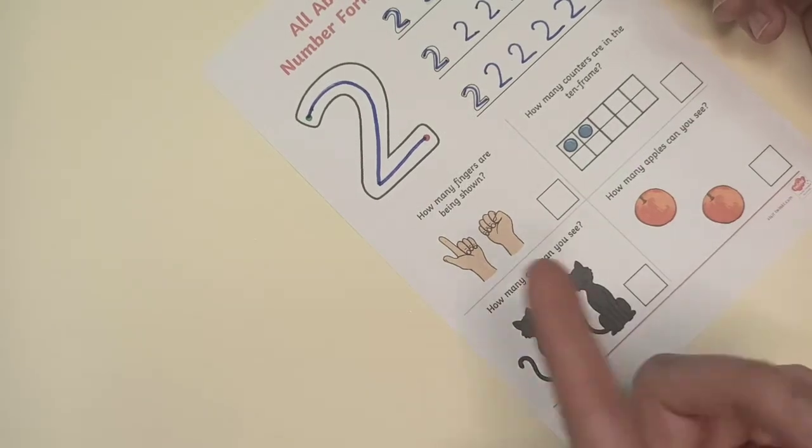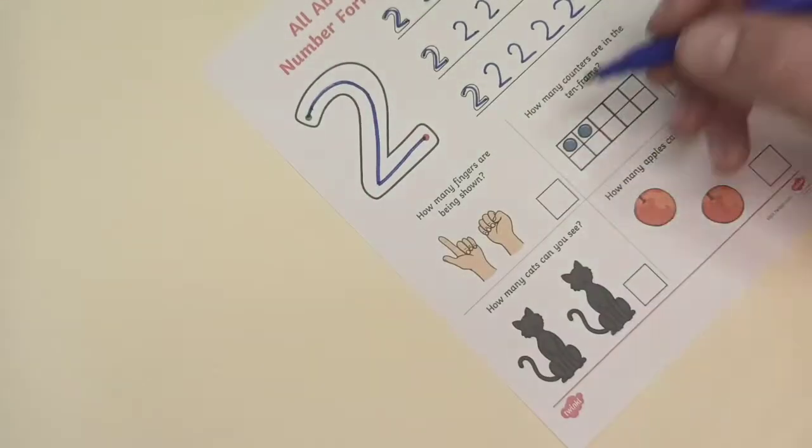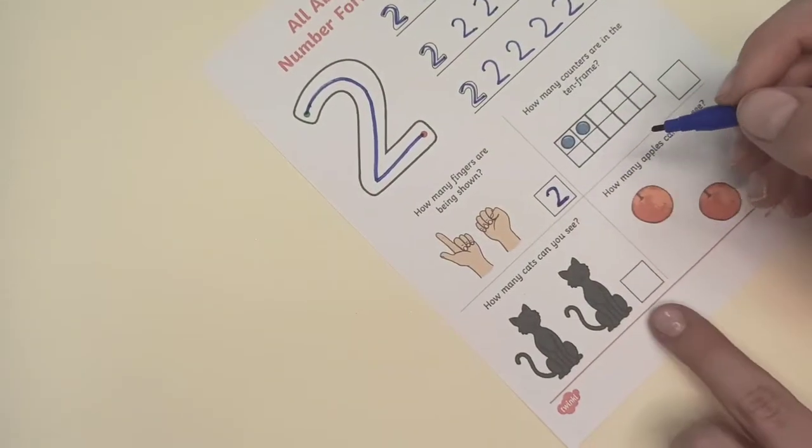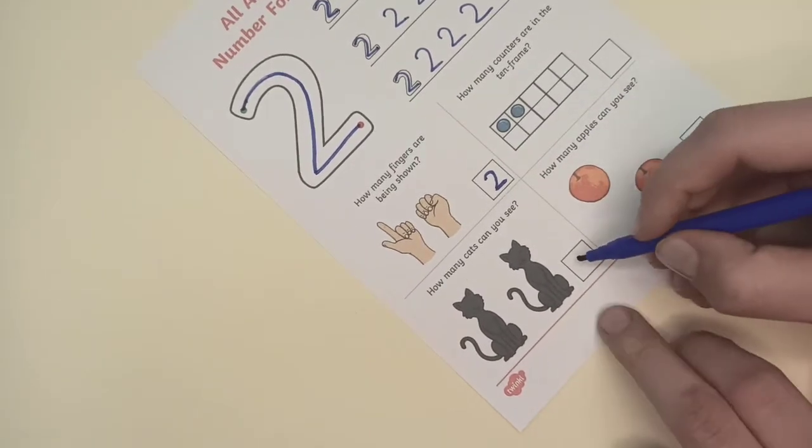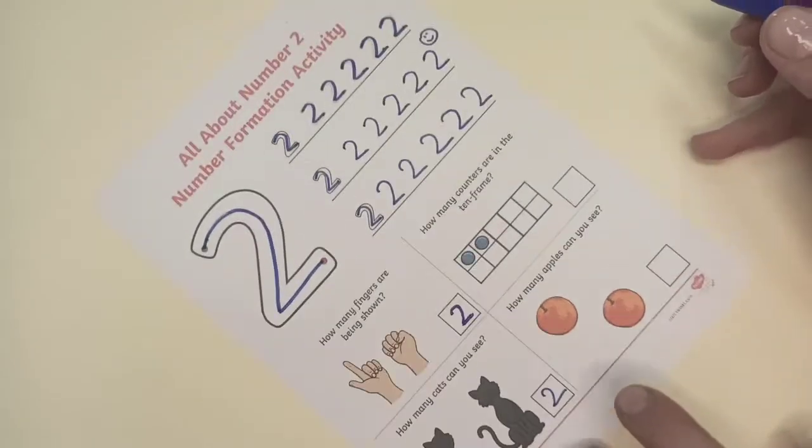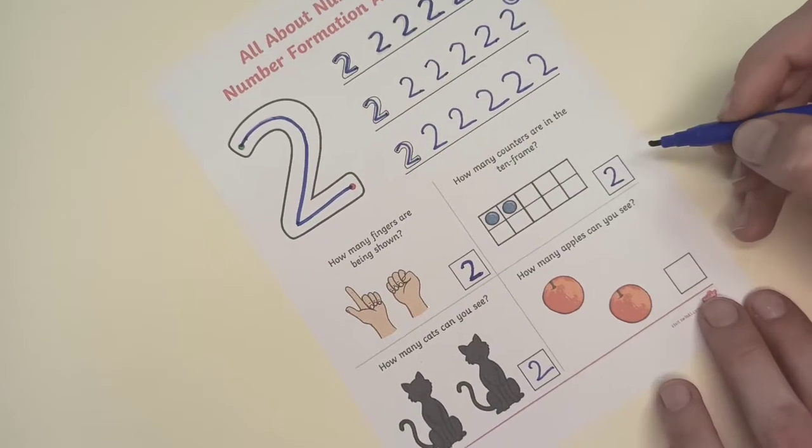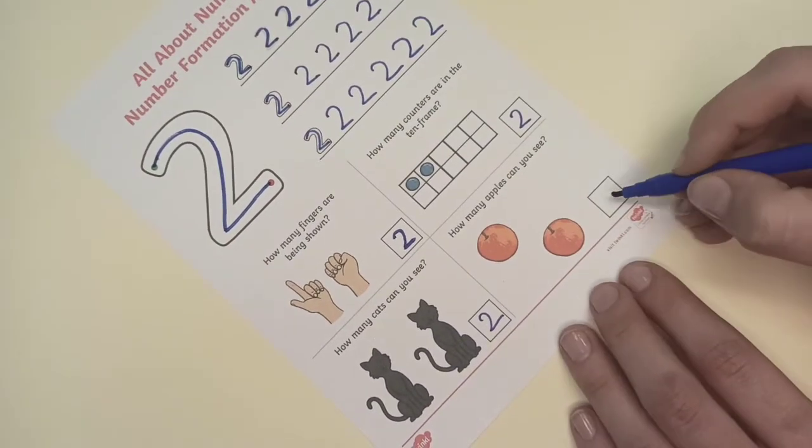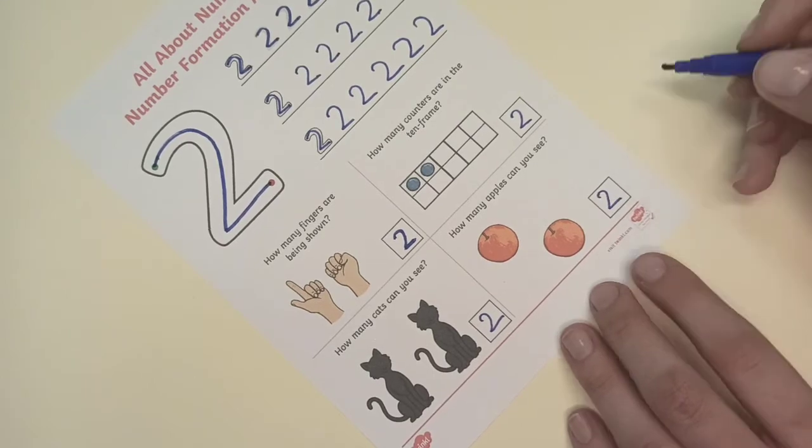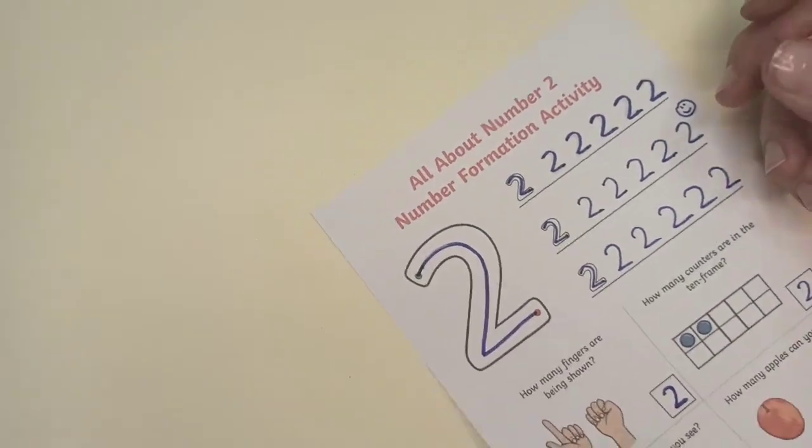How many fingers are being shown? 2. How many cats do you see? 2. How many counters are in the 10 frame? 2. And how many apples can you see? Also 2. Well done.